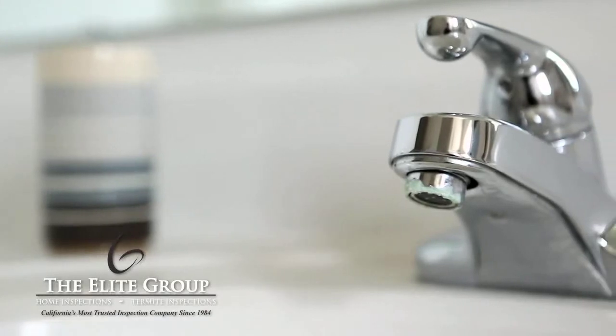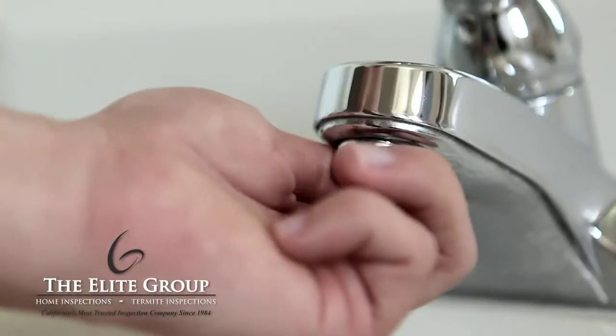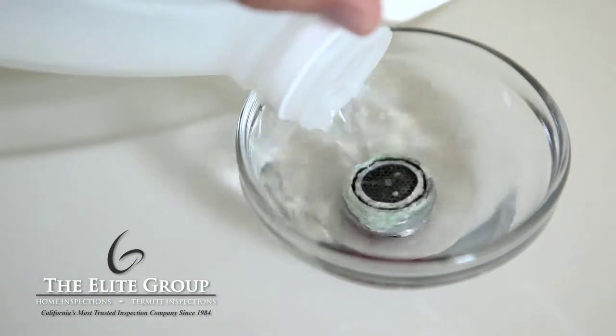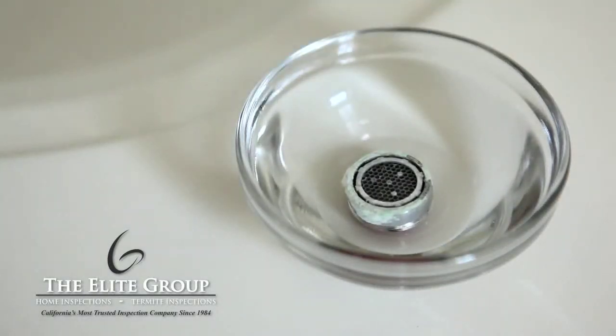Do you have hard water deposits on your faucets and shower heads? To take care of this, simply soak the faucet or shower head in vinegar overnight. This will remove any grime and leave your fixtures looking bright and shiny.